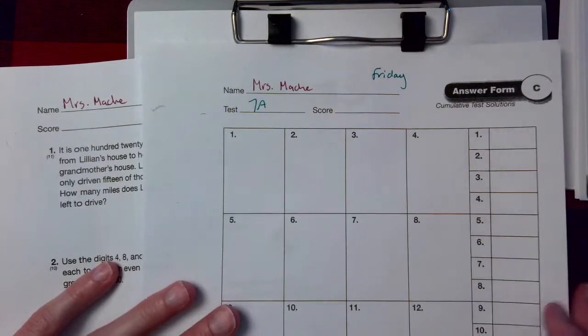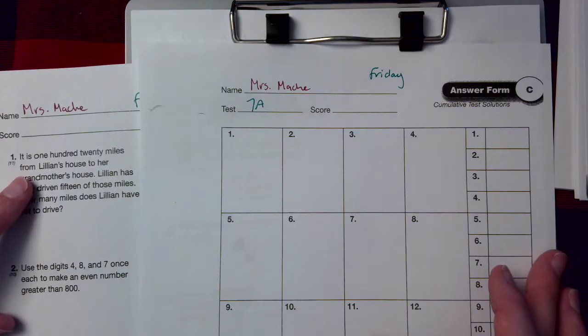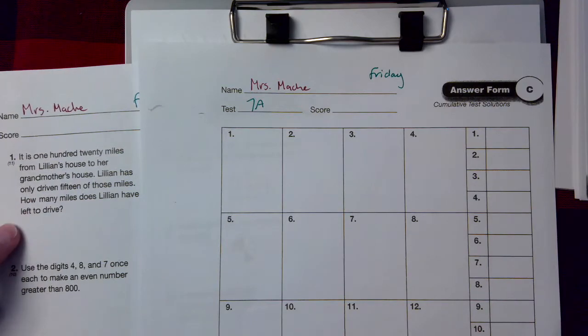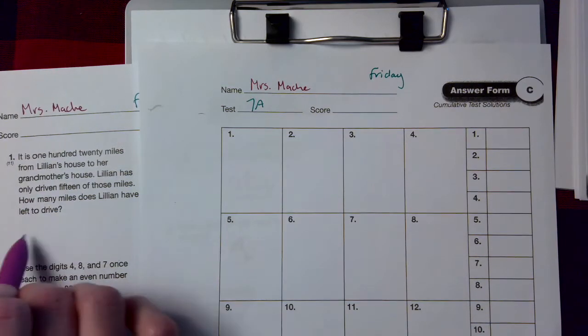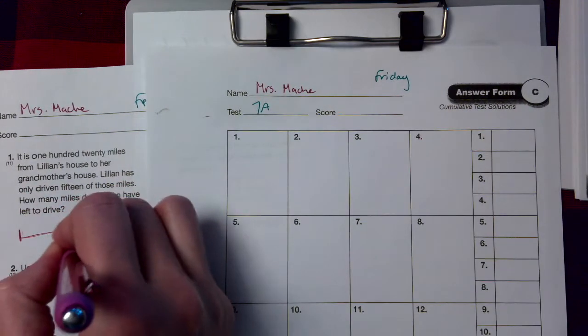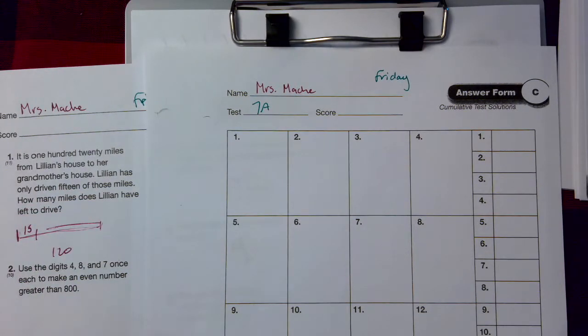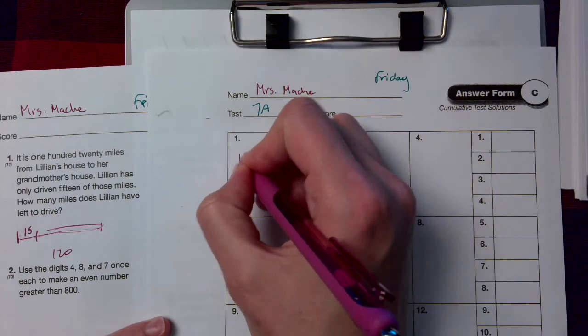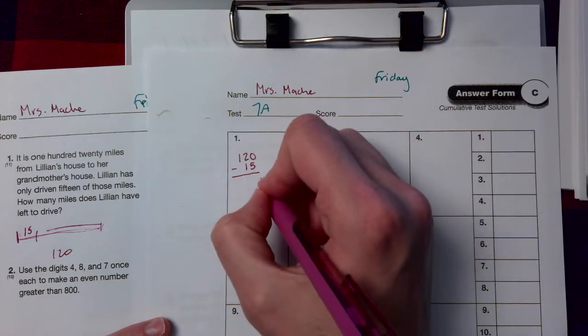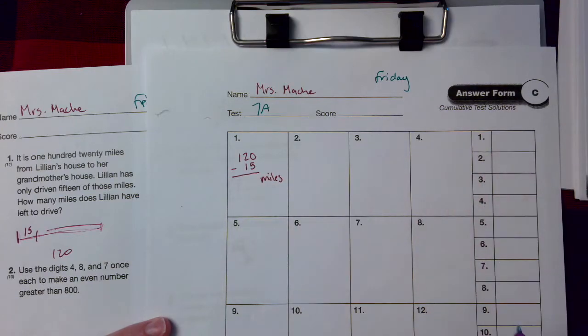Number 1. It is 120 miles from Lillian's house to her grandmother's house. Lillian has only driven 15 of those miles. How many miles does Lillian have left to drive? So the whole thing is 120. She's only driven 15, so how much is left? Missing piece, we've got to do a subtraction problem. So I'm going to do 120 minus 15 to get that many miles. Go ahead and work your subtraction problem, then get it over here in your box for number 1.